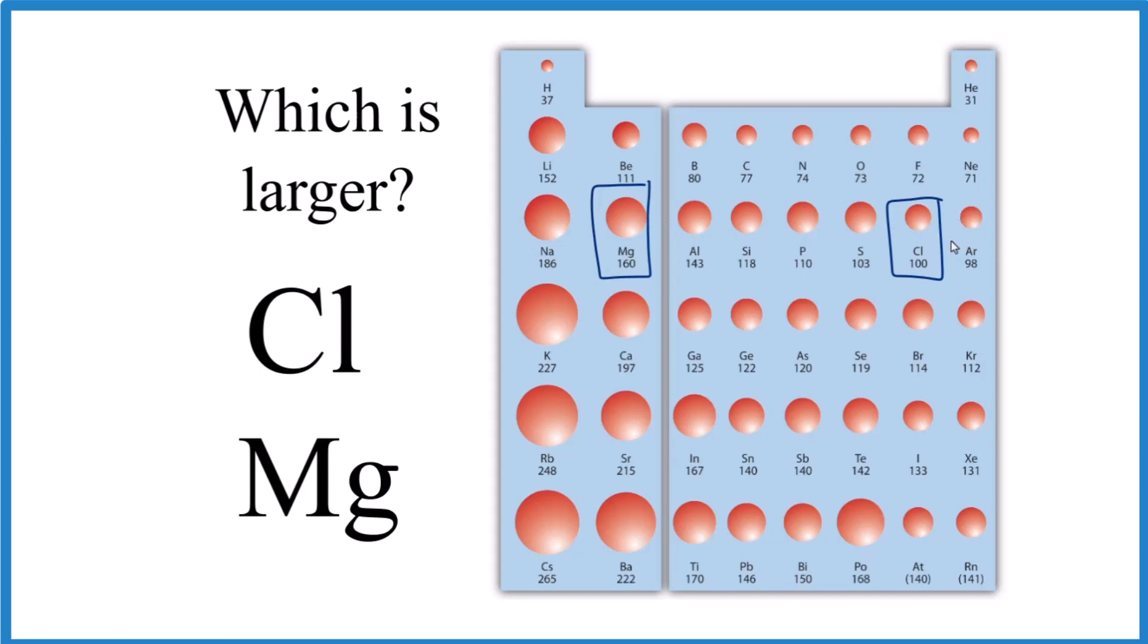We can look at the trends for atomic radius on the periodic table. As you go down these groups, the atomic radius increases. The atoms get bigger. But in this case, magnesium and chlorine are in the same period, so that doesn't help us.